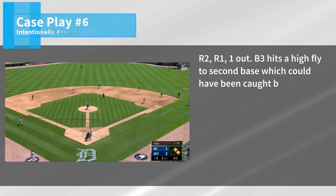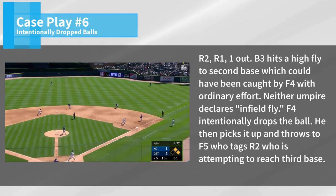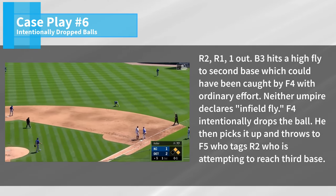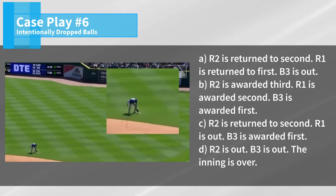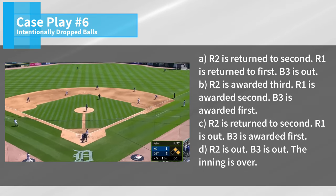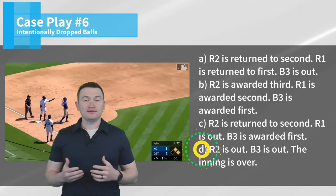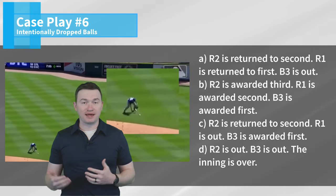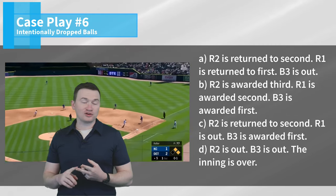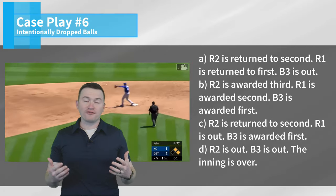Case play number six. R2, R1, one out. B3 hits a high fly to second base which could have been caught by F4 with ordinary effort. Neither umpire declares infield fly. F4 intentionally drops the ball, then picks it up and throws to F5 who tags R2 who is attempting to reach third base. Is this: A) R2 returned to second, R1 returned to first, B3 is out; B) R2 awarded third, R1 awarded second, B3 awarded first; C) R2 returned to second, R1 is out, B3 awarded first; or D) R2 is out, B3 is out, the inning is over. The correct answer is D. This is an infield fly — the batter is out — and then R2 advanced at their own risk and is out because they were tagged before reaching any base. What you need to take away is: first, an infield fly cannot be an intentionally dropped ball; and second, it's an infield fly regardless of whether the umpires accurately identify it in a reasonable amount of time. So long as the ball was an infield fly, it's an infield fly.